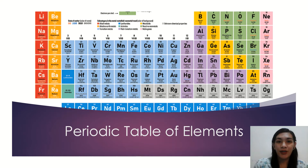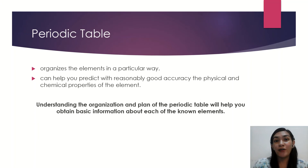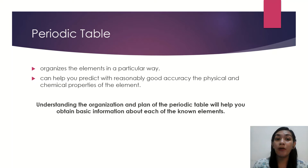In this video, we will be discussing the brief history of the periodic table of elements, and then we would also do some classification of elements according to their physical and chemical properties. The periodic table organizes the elements in a particular way, so a great deal of information about an element can be gathered from its position in the periodic table. Understanding the organization and plan of the periodic table will actually help you obtain basic information about each of the known elements.